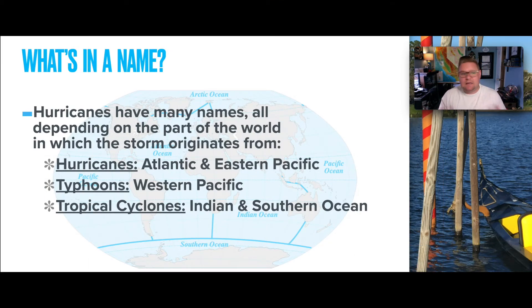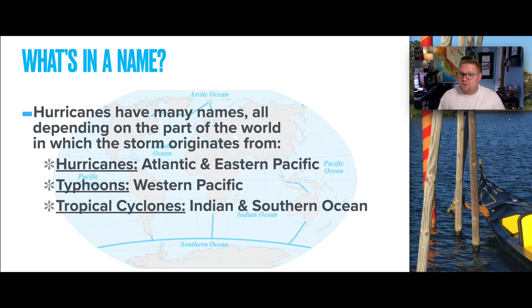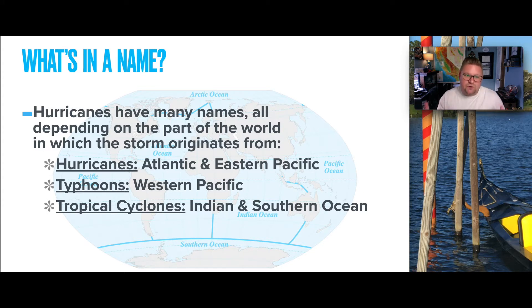Hurricanes have many names, all depending on the part of the world in which the storm originates. A hurricane can also be considered a typhoon or a tropical cyclone. The name 'hurricane' is given to storms that originate within the Atlantic and Eastern Pacific. Typhoons are considered the Western Pacific region, and tropical cyclones apply to the Indian and Southern Ocean.